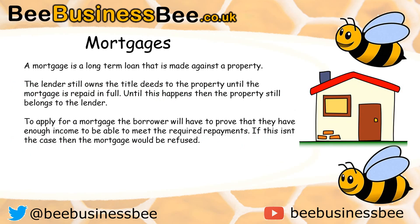Another form of borrowing is a mortgage, which is a long-term loan made against a property. The lender holds the title deeds of the property until the mortgage is repaid in full — until then the asset technically belongs to the lender. To apply for a mortgage you must prove you have enough income to meet the required payments; if not, the mortgage will be refused. Mortgages are very strictly regulated and lenders must ensure you have the ability to meet repayments while also factoring in potential changes to your personal circumstances.